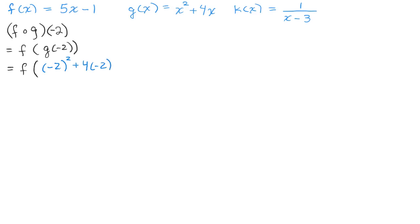Now I simplify before doing the f function. Negative 2 squared means negative 2 times negative 2, which is positive 4. Then 4 times negative 2 is the same as minus 8. So 4 minus 8 equals negative 4. G of negative 2 simplifies all the way to negative 4.